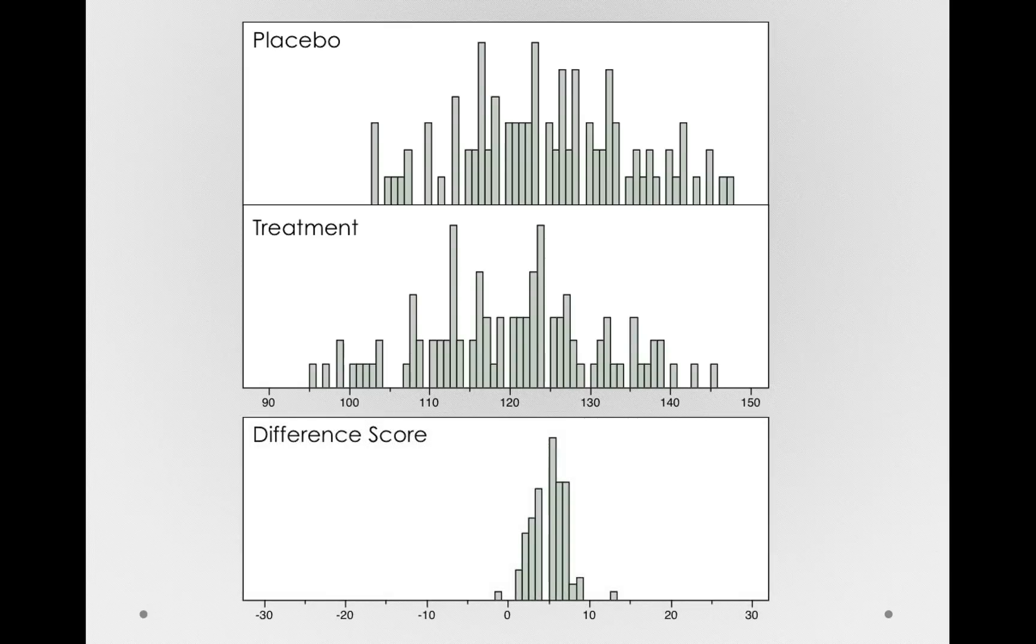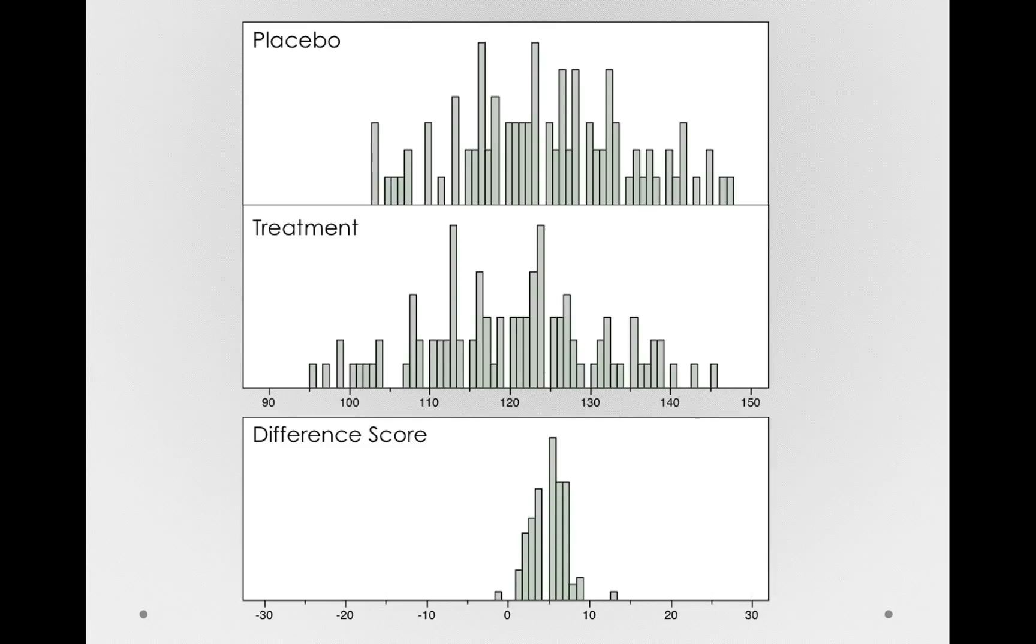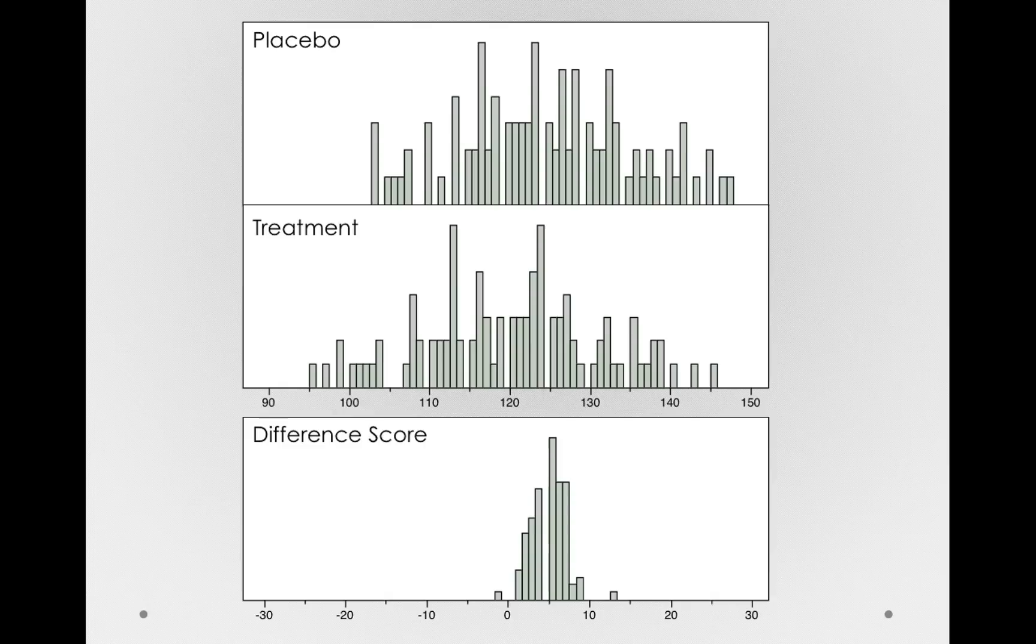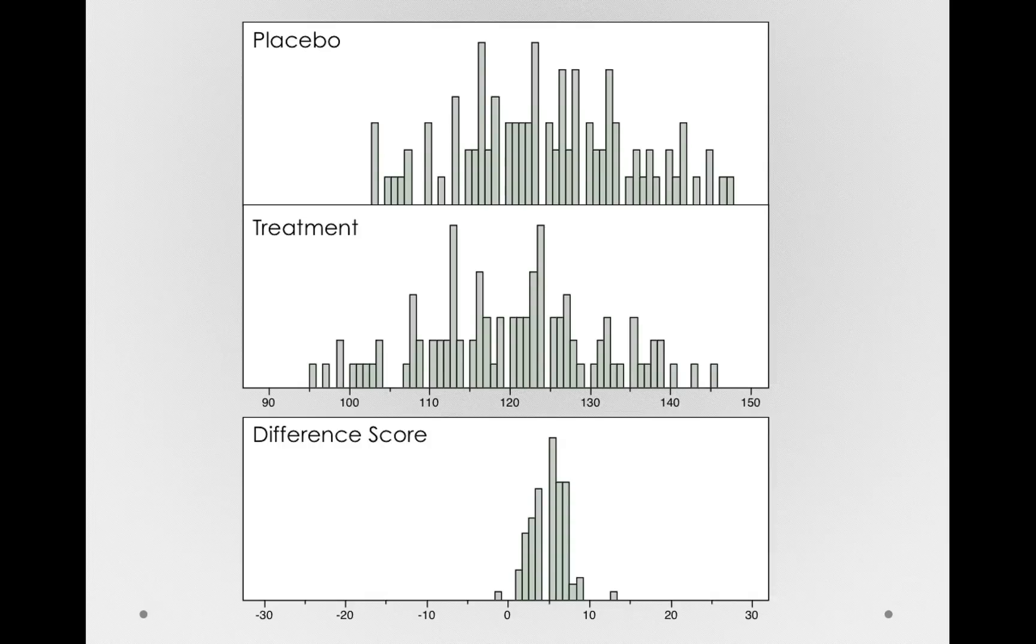Now let's look at the difference score column. I've retained the same scale range. That is, the range goes from negative 30 to positive 30, a range of 60, just like the other two histograms. But I've had to shift the location of the center. Obviously, a difference score is going to be centered closer to zero than 120, like the other distributions.